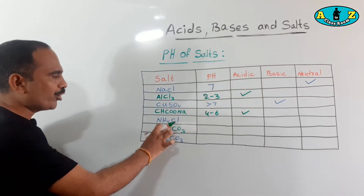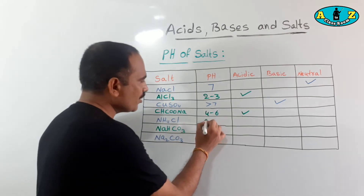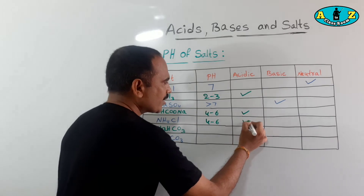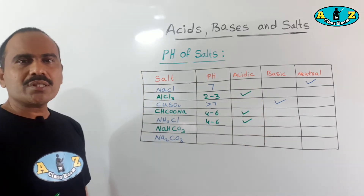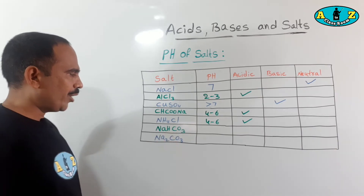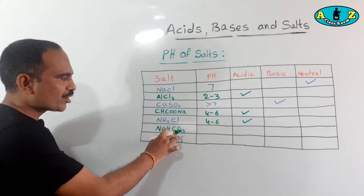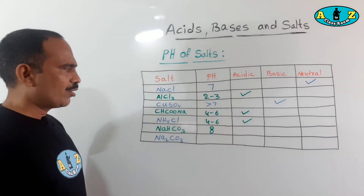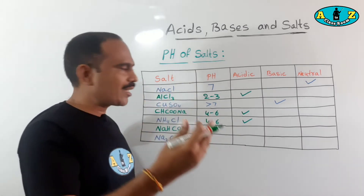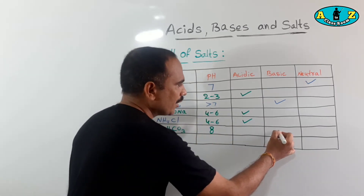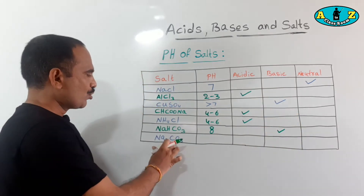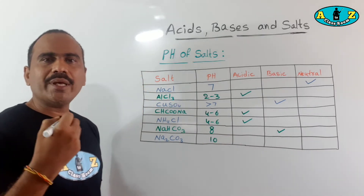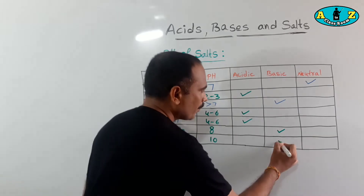The next salt is ammonium chloride. Its pH value is also 4 to 6, and it is below 7, so its nature is acidic in nature. Next is sodium hydrogen carbonate. Its formula is NaHCO₃, and its pH is nearly 8. Since 8 is more than 7, it is basic in nature. Finally, sodium carbonate has a pH value of 10, which is more than 7, so it is basic in nature.